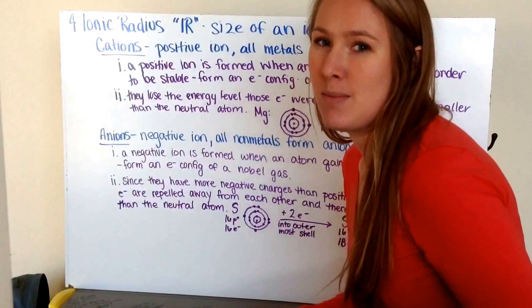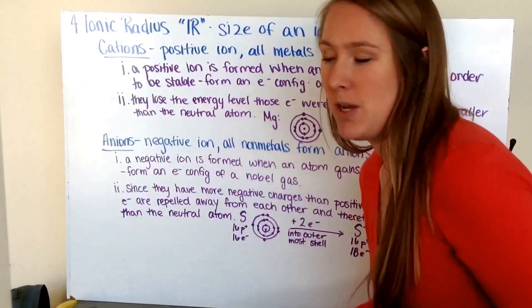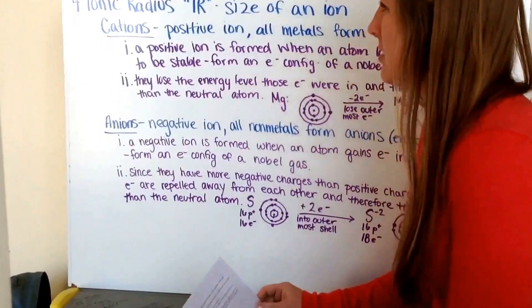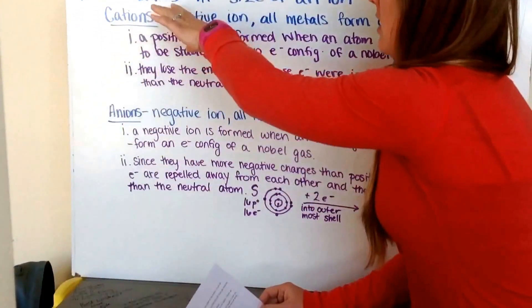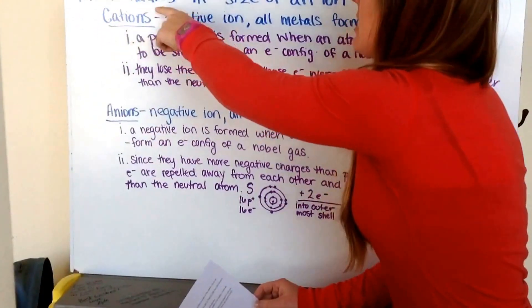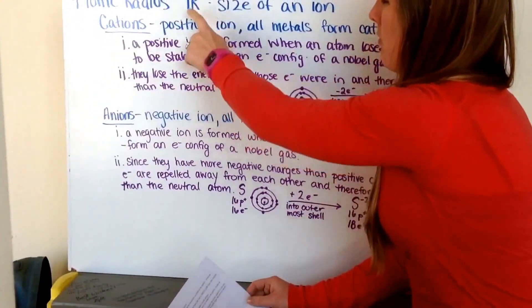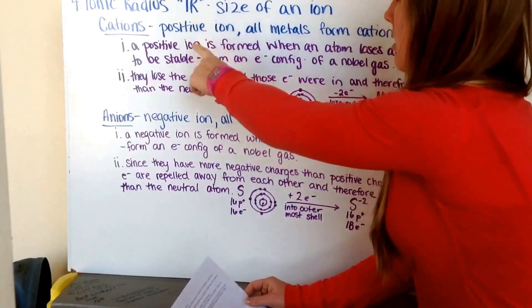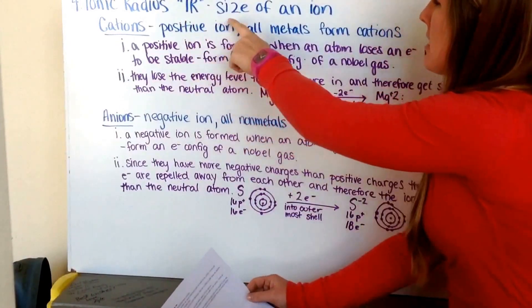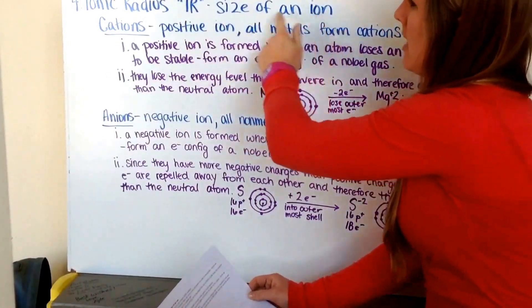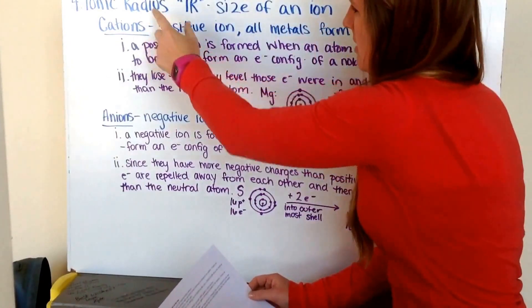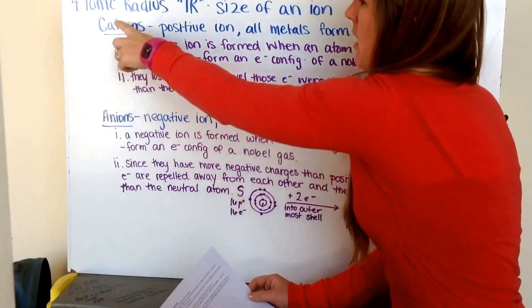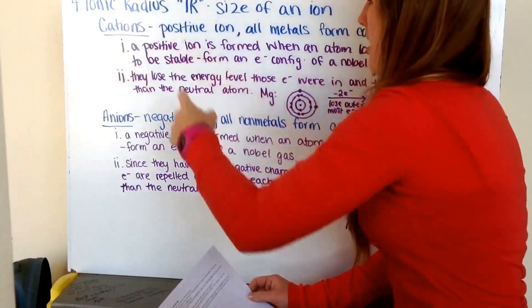This video is on my fourth periodic trend: the ionic radius. Ionic radius is abbreviated as IR, and this is the size of an ion — the radius, the size of our ion.